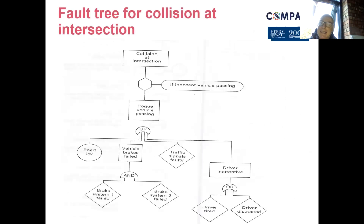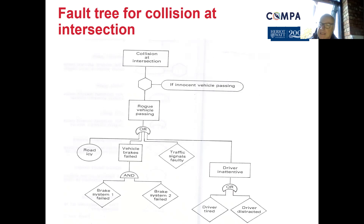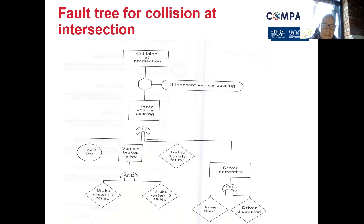A traffic intersection collision example shows how FTA works: every time a vehicle approaches a junction, what are the chances of collision? You can break it down looking at variations — the vehicles approaching, road conditions, human elements, and signals — all coming together. The human element comes in as well as road conditions and all the signs, symptoms, and signals that can combine.